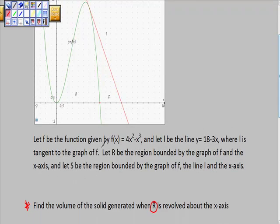So here it says let R, so we can read this whole thing. Let F be the function given by f(x) equals 4x squared minus x cubed, and let L be the line y equals 18 minus 3x when L is tangent to the graph of F. Let R be the region bounded by the graph of F and the x-axis. So here's our bound here and here.